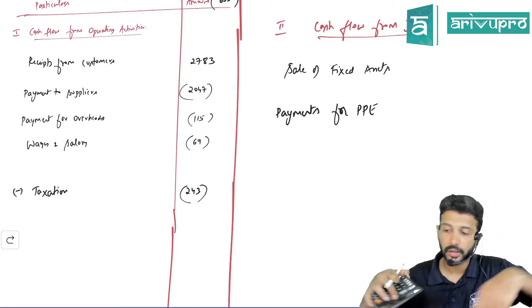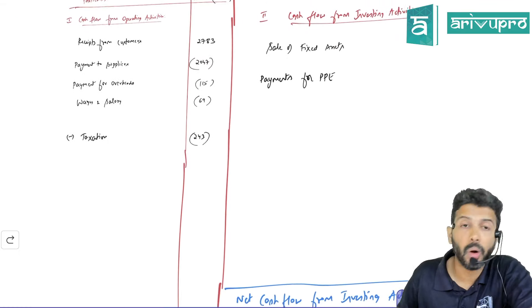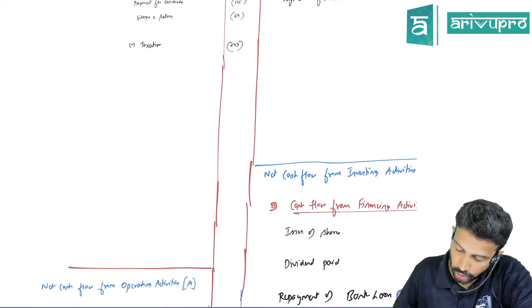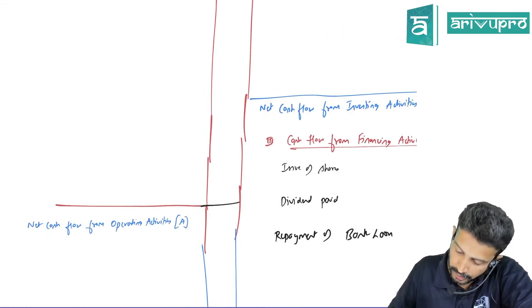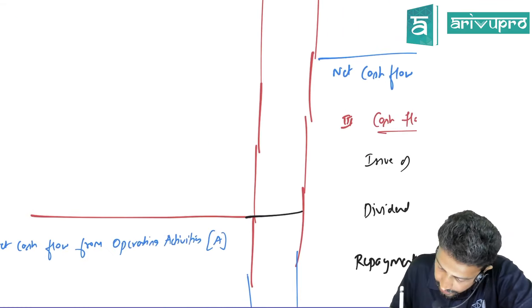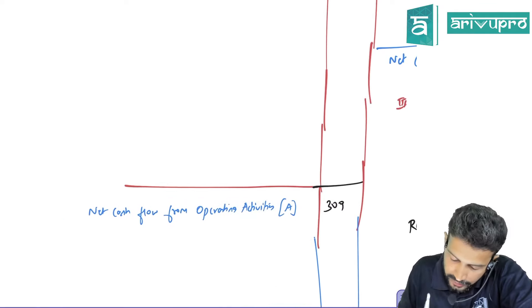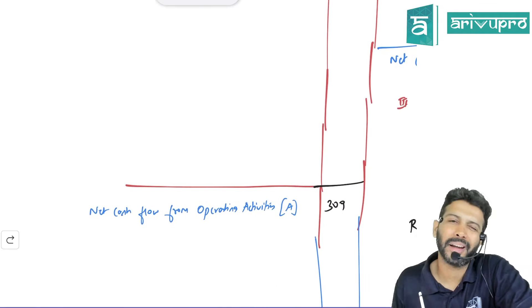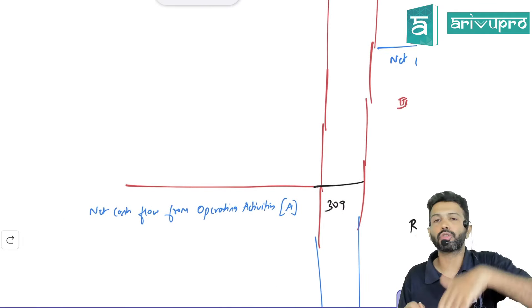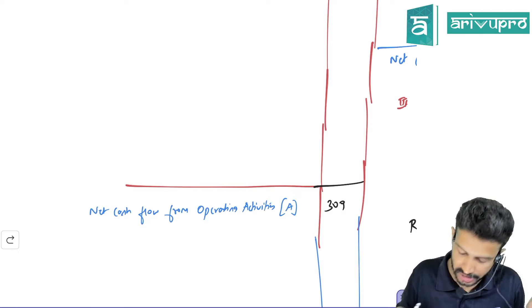Adding up all operating cash flows gives Net Cash Flow from Operating Activity: 309 positive. Net Cash Flow from Investing Activity: 102 negative — since it's negative, we call it 'Net Cash Used in Investing Activity.' Net Cash Flow from Financing Activity: 30 negative — 'Net Cash Used in Financing Activity.'